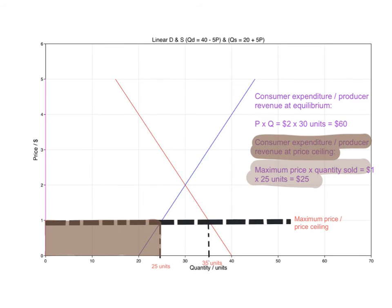You can see that there has been a decrease in consumer expenditure and producer revenue at this price ceiling. To calculate the difference, we know that before the price ceiling the consumer expenditure is $60, after the price ceiling it's $25. To calculate the change, do 60 minus 25 which gives you $35. It's important to mention whether it is a drop or a rise. In this case there is a drop in consumer expenditure of $35, and you can also say there is a drop in producer revenue of $35.